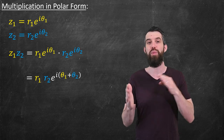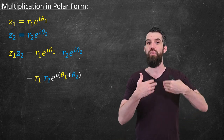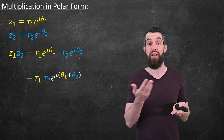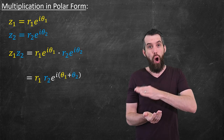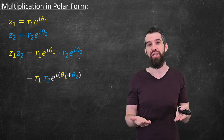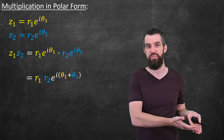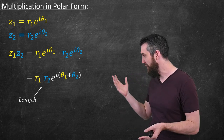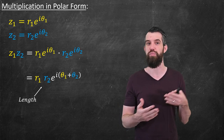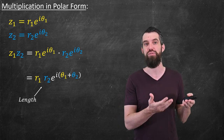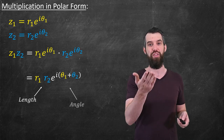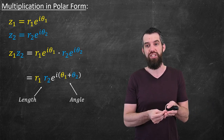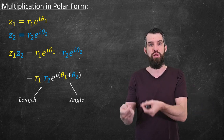So if you multiply two complex numbers, the magnitude of the result is just r₁ times r₂ — the product of the two magnitudes. And the argument, or angle, is just the sum of the two previous arguments. The multiplication of these two complex numbers has length r₁·r₂ — the product of the individual magnitudes — and the argument of the new complex number is simply the sum of the two previous angles.